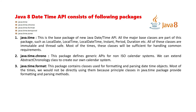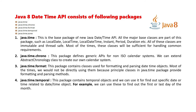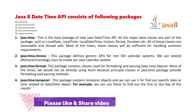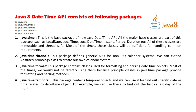The java.time.format package contains classes used for formatting and parsing DateTime objects. Most of the time we would not directly use them because the principal classes in java.time already provide formatting and parsing methods. We commonly use the constants defined in java.time.format. The java.time.temporal package contains temporal objects that can be used to find specific date or time related to a DateTime object — for example, finding the last or first day of the month or year.